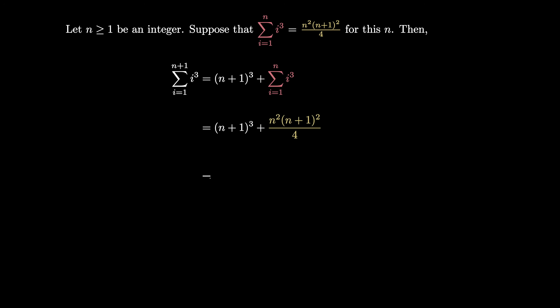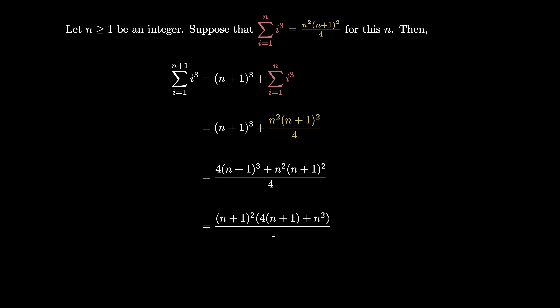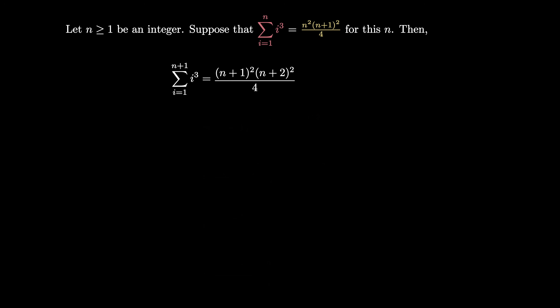Now we just have a little bit of algebra to do. First we add the fractions to get 4 times (n plus 1) cubed plus n squared times (n plus 1) squared, all over 4. Then we factor out an (n plus 1) squared so that the numerator becomes (n plus 1) squared times the quantity 4 times (n plus 1) plus n squared. This numerator simplifies to (n plus 1) squared times the quantity n squared plus 4n plus 4, and now the numerator factors to (n plus 1) squared times (n plus 2) squared divided by 4. But this is exactly the formula that we hoped for, since our sum stops at n plus 1, giving us (n plus 1) squared times (n plus 2) squared all divided by 4.